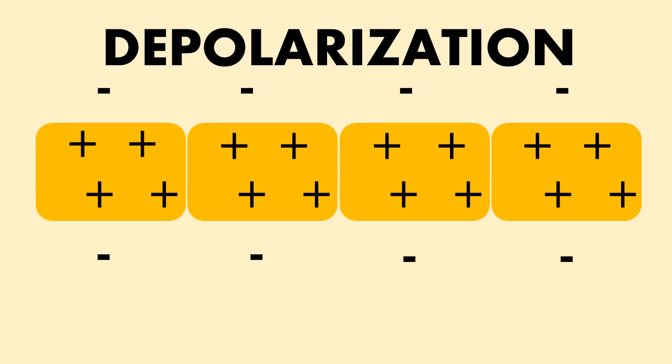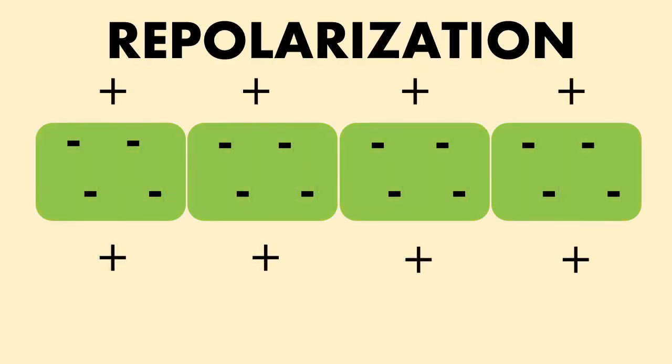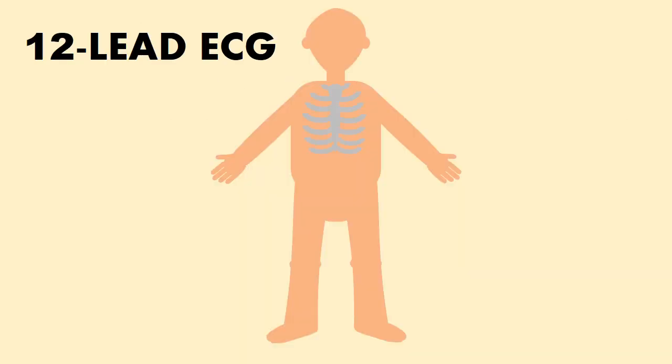Repolarization is the process that follows depolarization and changes the cell's electric charge back to negative. In a standard 12-lead ECG, 10 electrodes are placed on the patient's skin — four of them on the limbs and six of them on the chest wall.